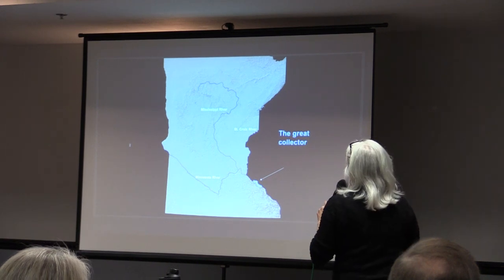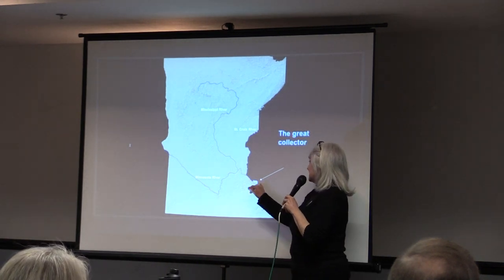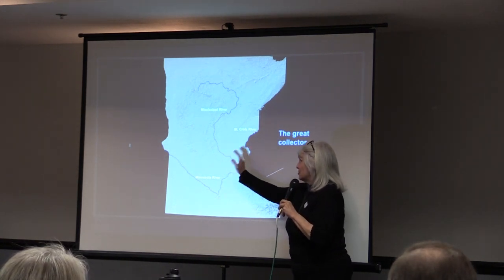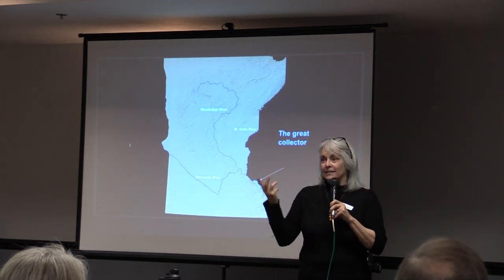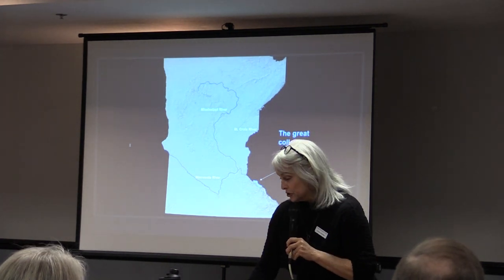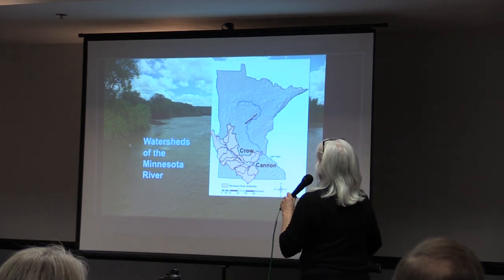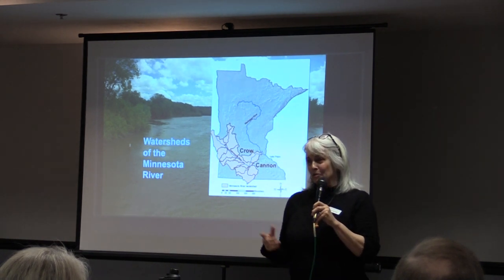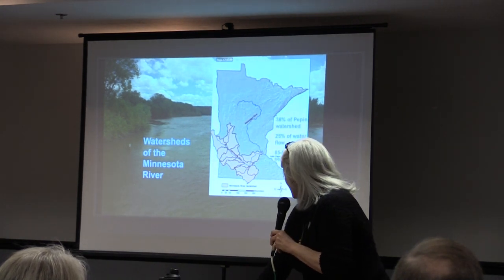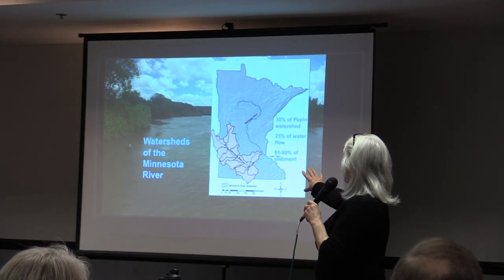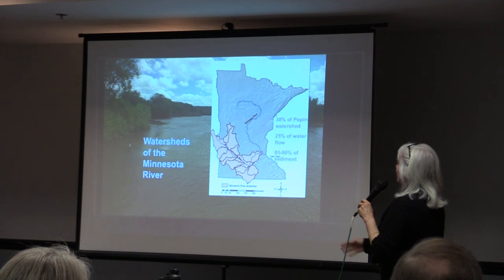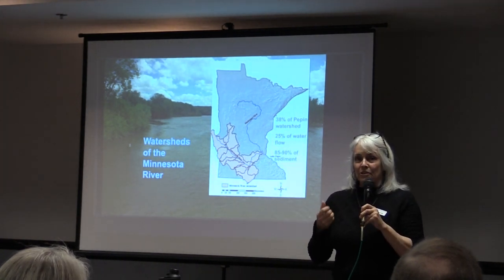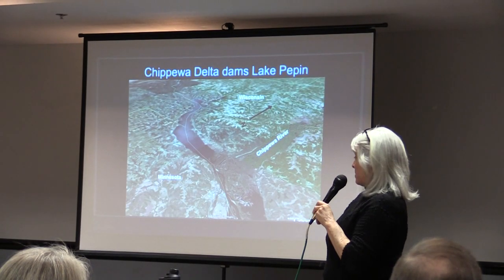Lake Pepin is an interesting experiment we have in Minnesota, because three major watersheds all drain to Lake Pepin, and Lake Pepin collects the sediment from those watersheds — and you can tell that sediment apart. The Minnesota River watersheds in pink are only 38% of the delivery of water to Lake Pepin, but they contribute 85 to 90% of the sediment. And this is actually shortening the life of Lake Pepin significantly.